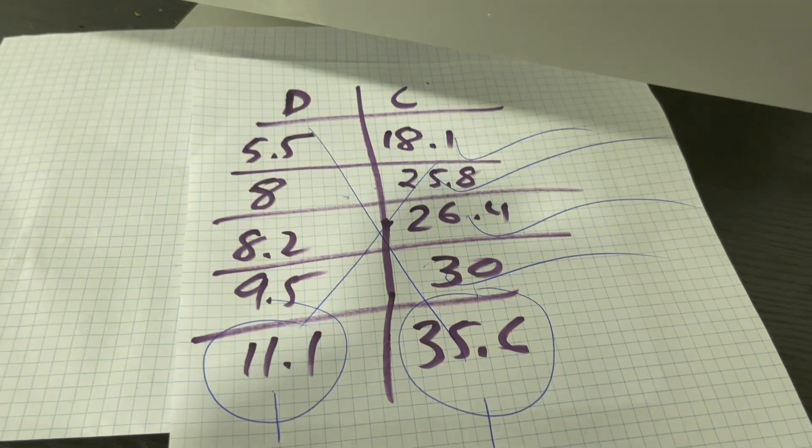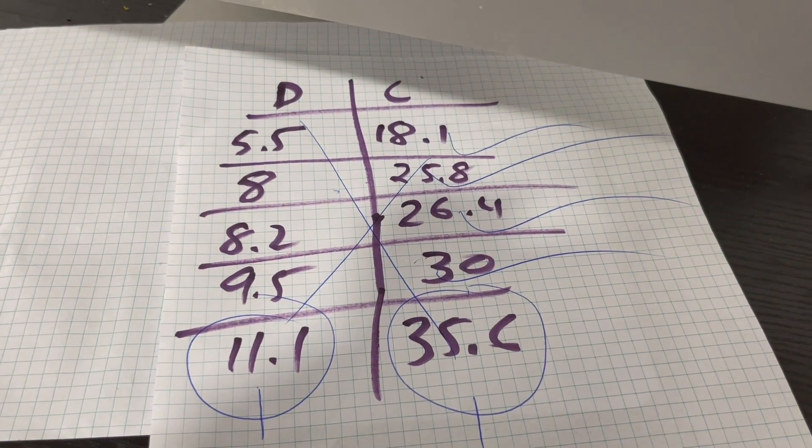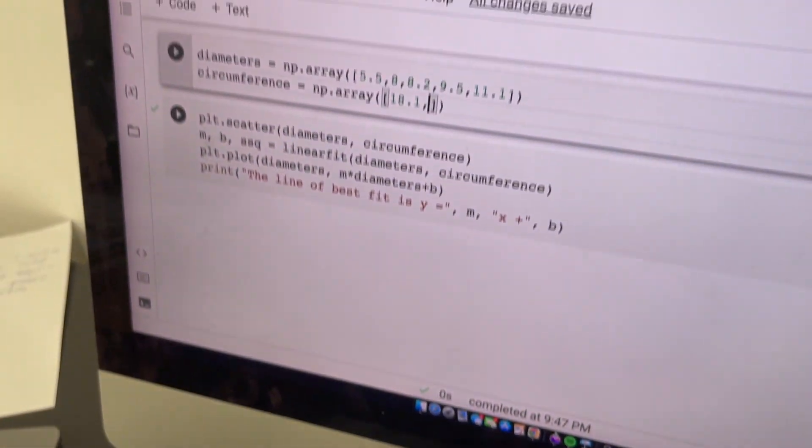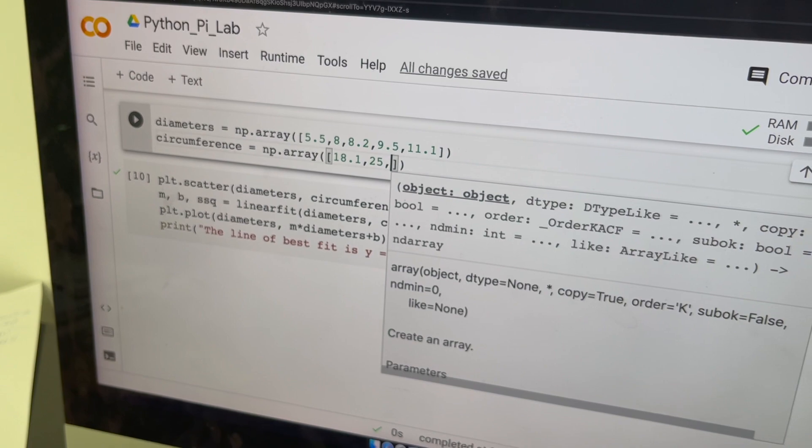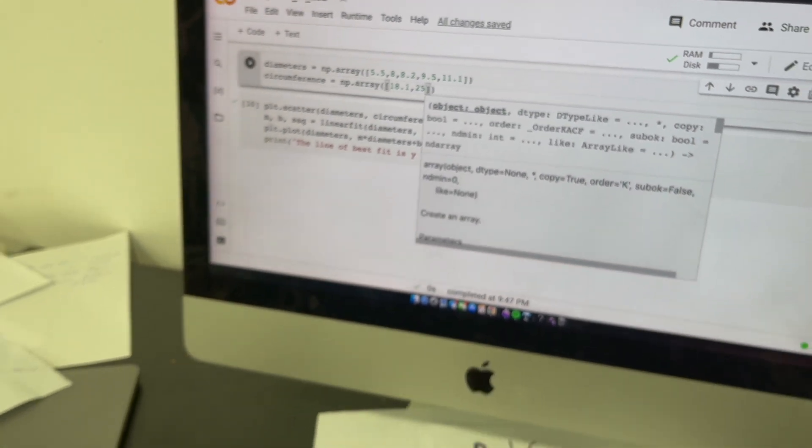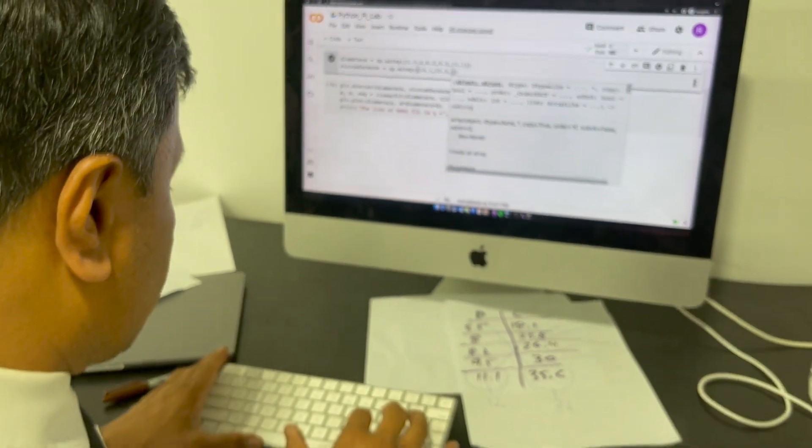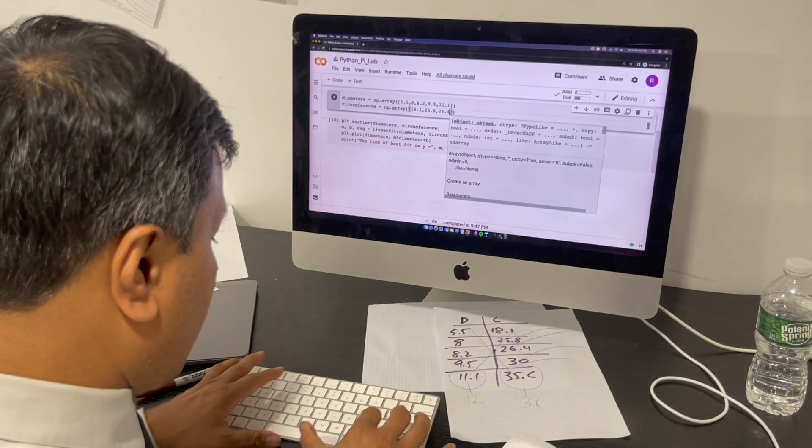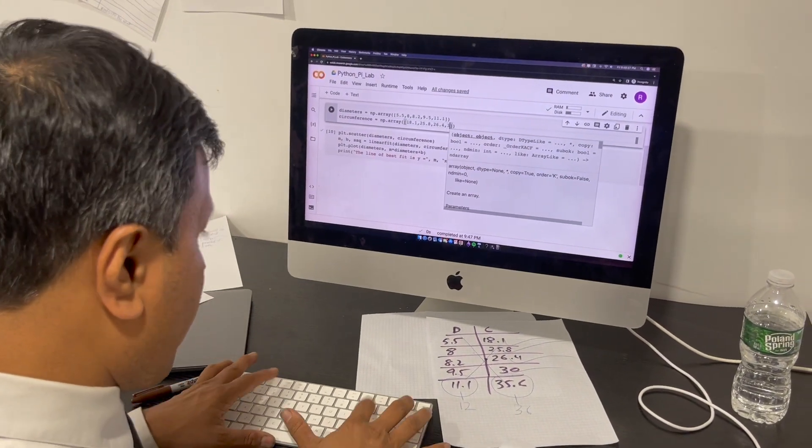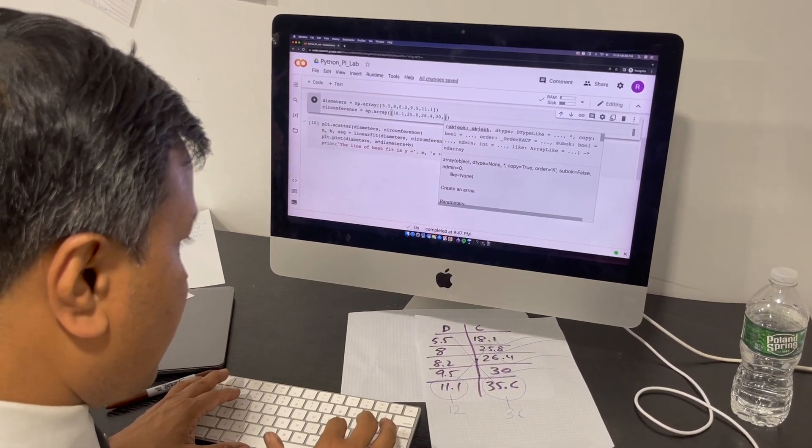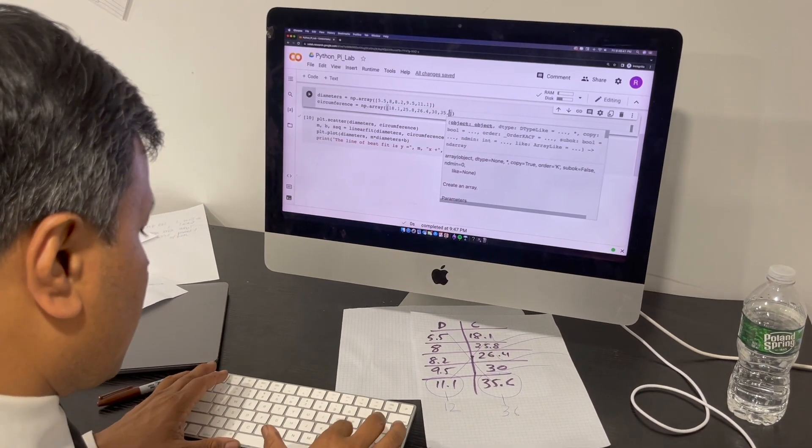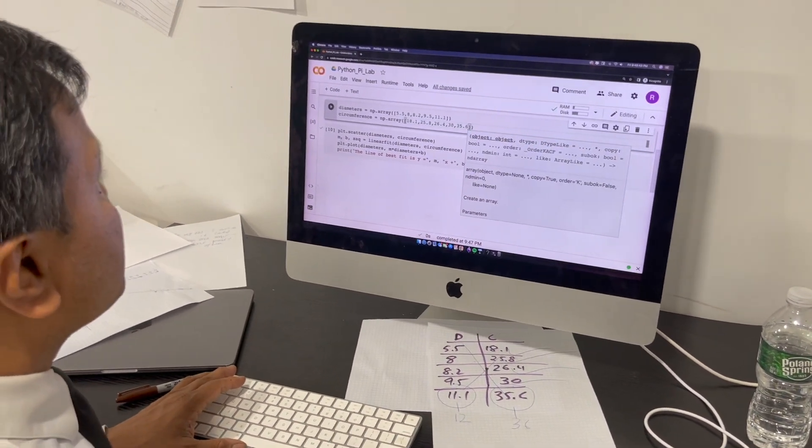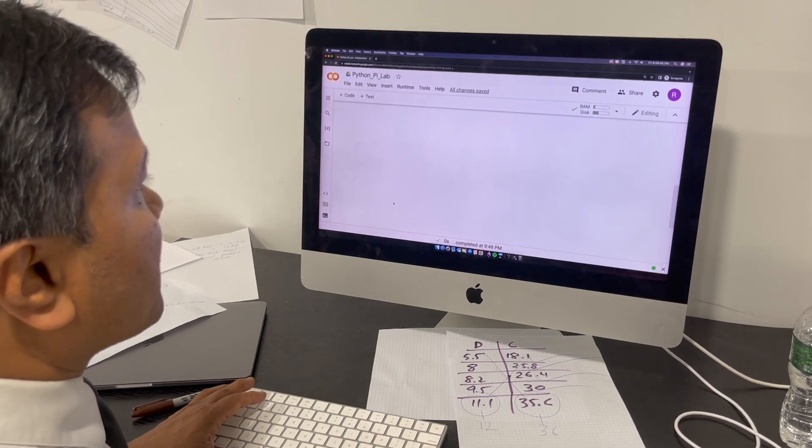And then we're going to put the y-axis which is circumference 18.1. Of course 25.8. 26.4, 30, and 35.6. All right. So let's see. We're going to run it. If we do that. All right.